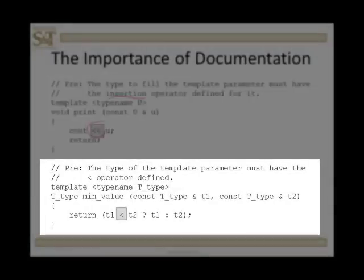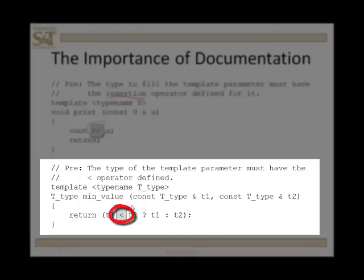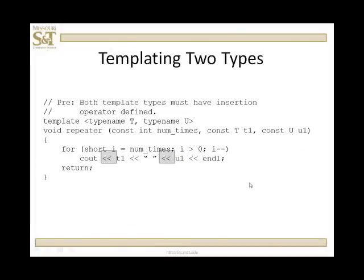In the second example, it is the less than operator which must be defined for the type. If that is not defined for the type that you're going to instantiate this function with, then it's simply not going to work. It's going to blow up on you.